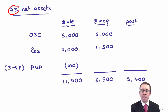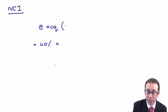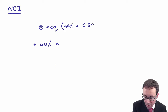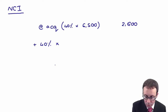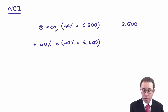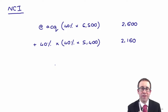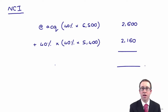So post-acquisition profits are 5,400. The non-controlling interest at acquisition is 40% of the net assets at acquisition — 40% of 6,500 — which gives 2,600. We also want 40% of the post-acquisition profits of 5,400, which gives 2,160. Please be very careful here.